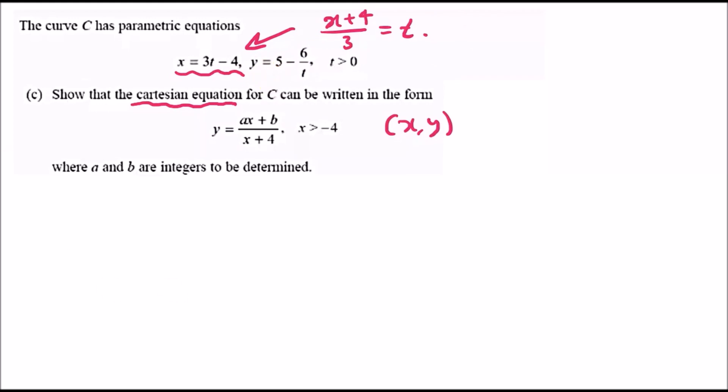Let's try and find the expression for 6 over t. The way I'll do this is take the reciprocal of this equation, so we're going to have 3 over x plus 4 equals 1 over t. At this stage, we just need to multiply 6 across to get 6 over t. This should give us 3 times 6 is 18 over x plus 4 equals 6 over t.